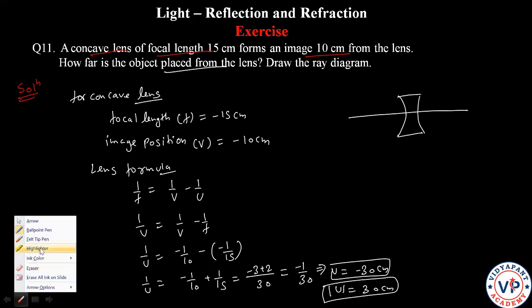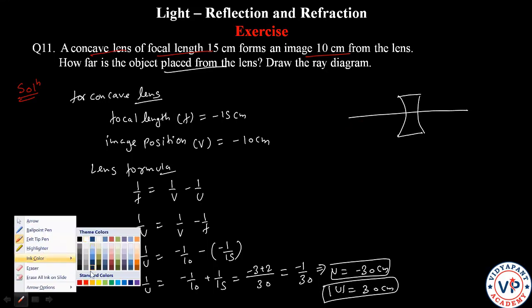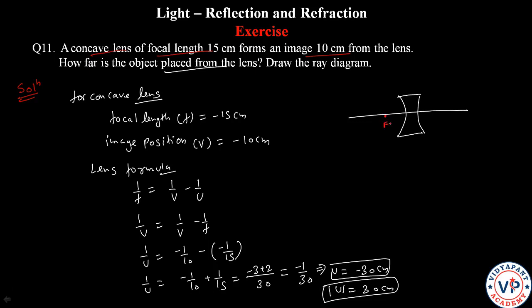The object is at 30 cm. This is the focus, this is 2F. The object is at 2F distance because the focus is at 15 cm.